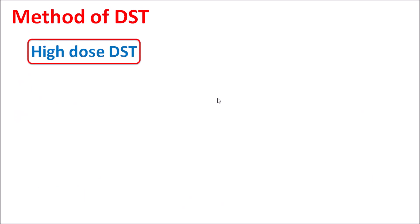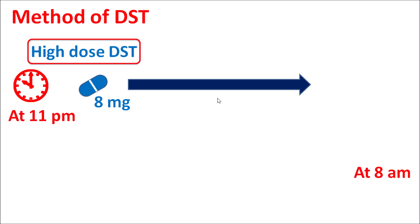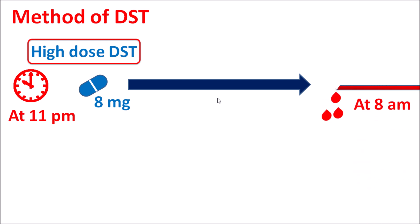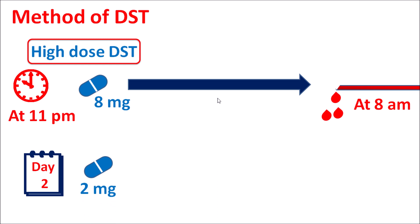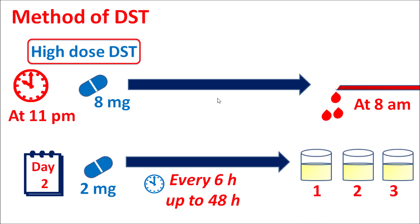For the high dose test, again two methods are used. In the overnight method, 8 mg of dexamethasone is given at 11 pm and a sample is collected at 8 am to estimate cortisol levels. In the standard method, dexamethasone is given at a high dose of 2 mg, repeated every 6 hours for up to 48 hours. Urine is collected over these 3 days to estimate cortisol levels.